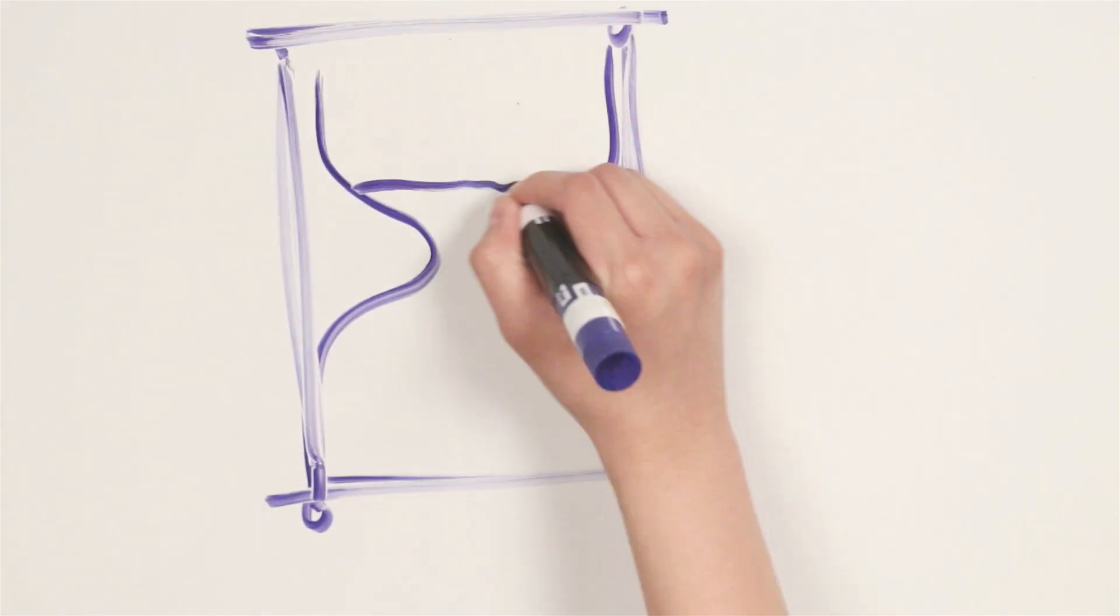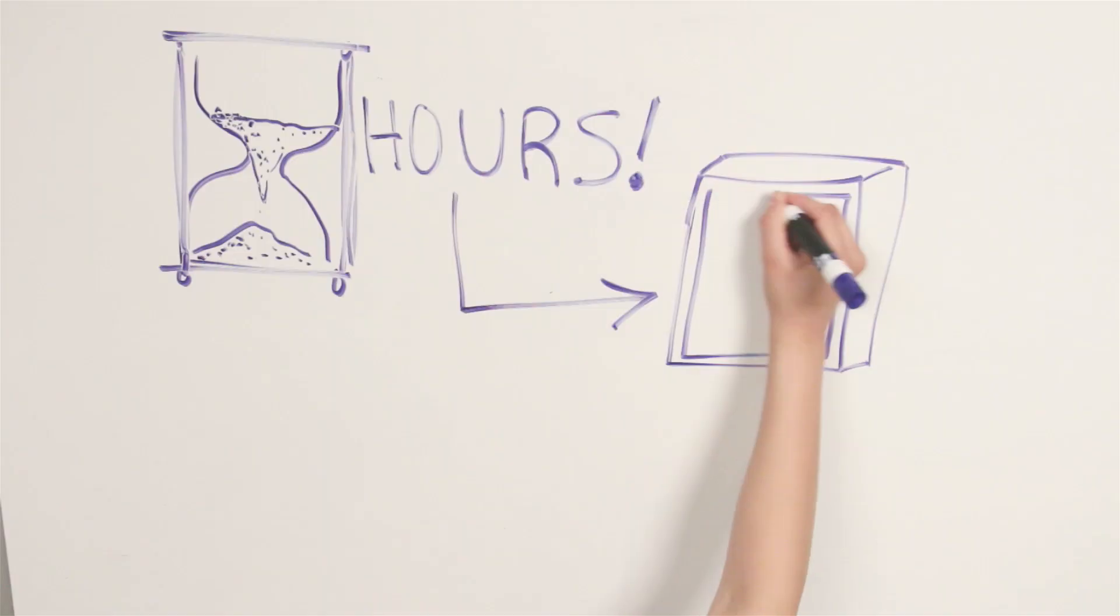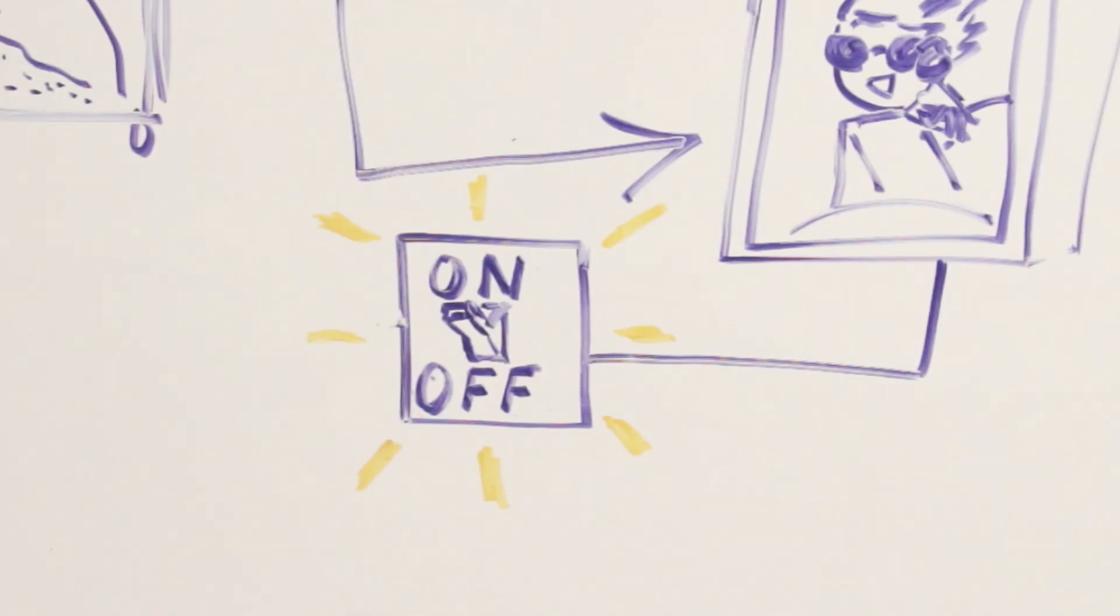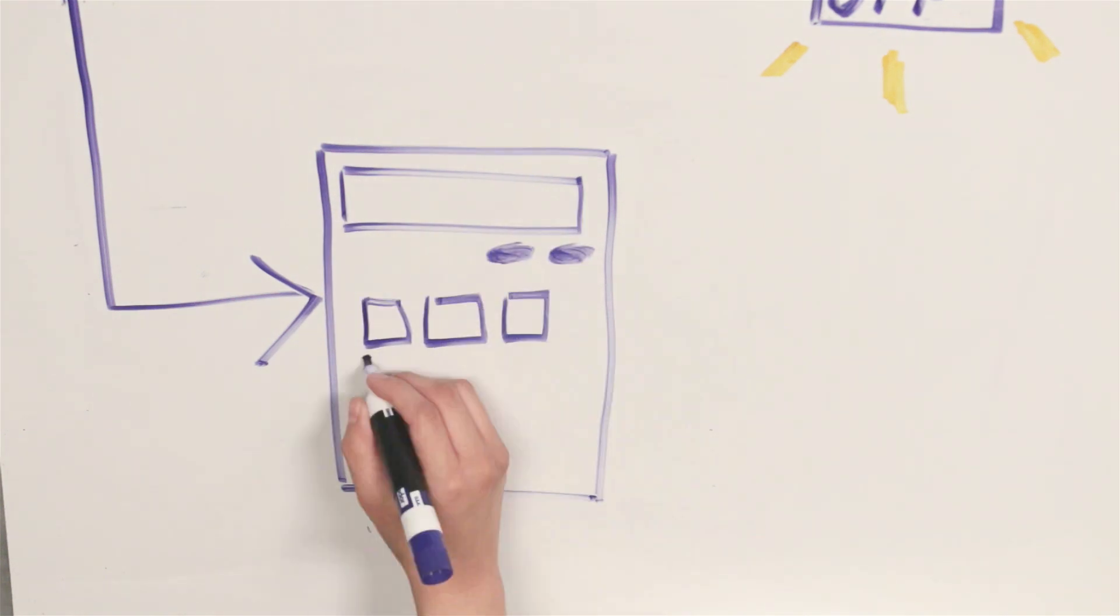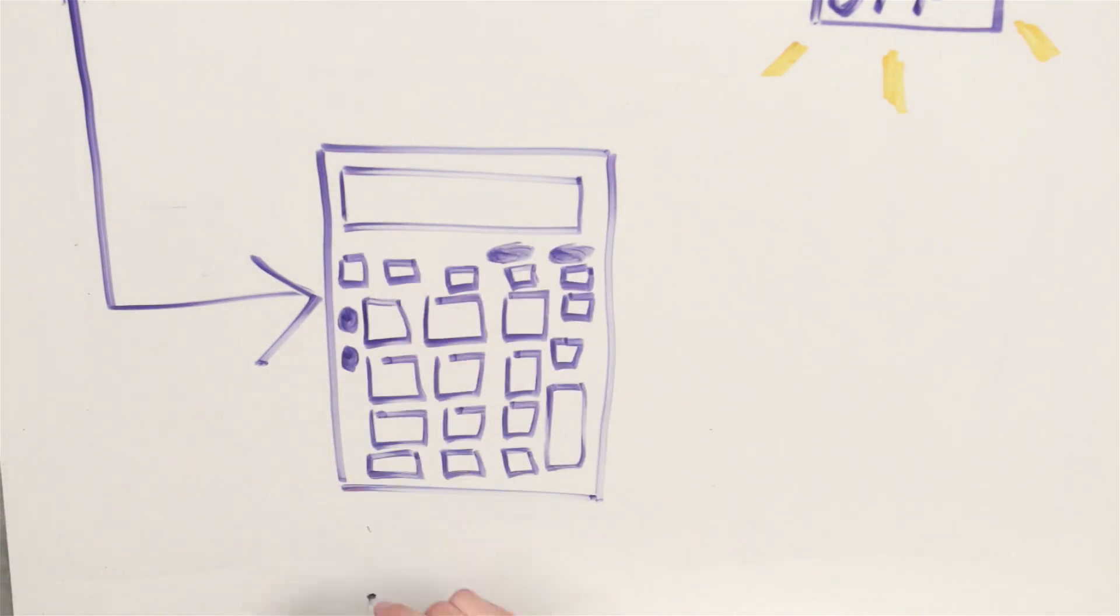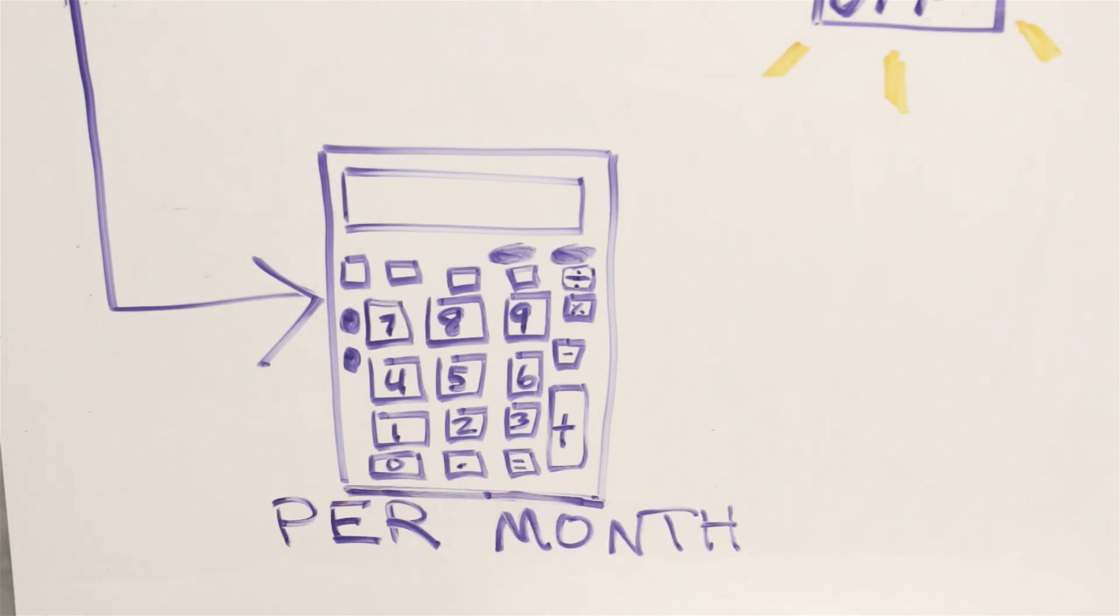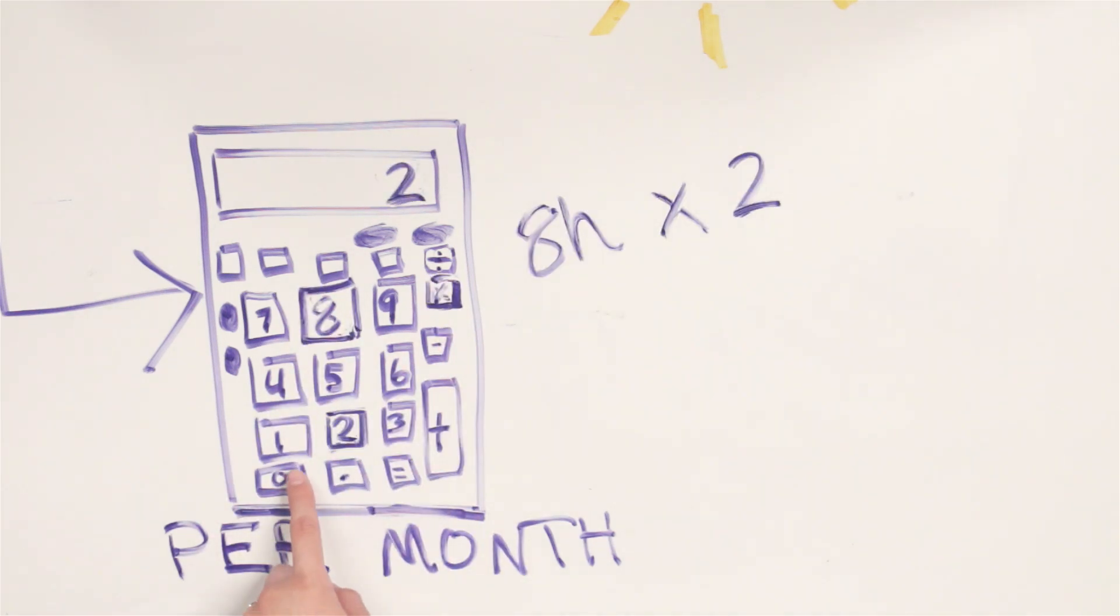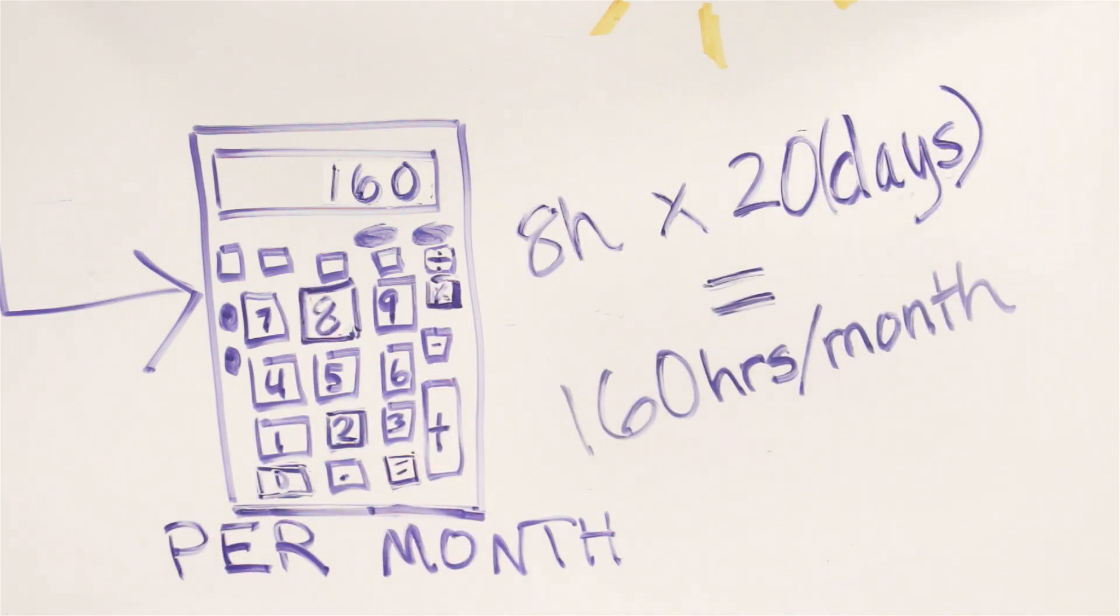Two, you're going to want to map out how many hours you expect your lightbox to be switched on or lit and the time period that you need to calculate the cost for. For example, if you were planning on calculating the cost per month and you're expecting your lightbox to be on 8 hours a day for 20 days a month, that would be 8 times 20, giving you 160 hours per month.